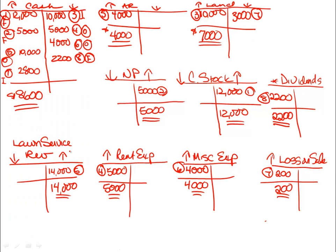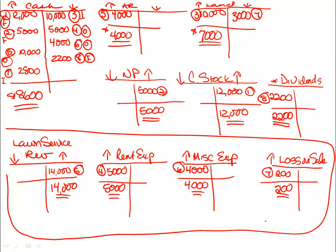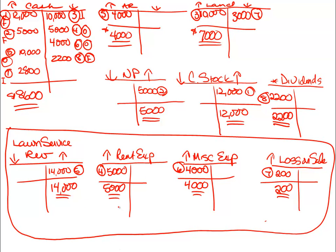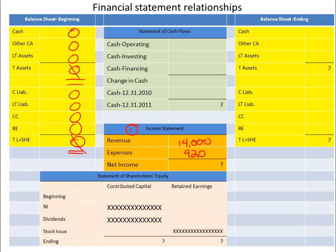During the year, the company entered into a series of transactions. We know that the first financial statement we prepare is the income statement, which includes all the balances of our revenue and expense accounts. Our revenue account has a balance of $14,000. Our expenses of $5,000 and $4,200 come to a total of $9,200, so our net income for the year is $4,800.